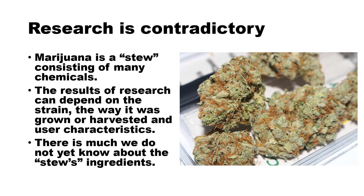The research on marijuana is contradictory, and that's not just because of the biases of researchers. One of the biggest problems is that marijuana is not a specific chemical — it is a stew consisting of many chemicals. Think about it: if you were served beef stew versus brussel sprouts vegetarian stew, the results would be different. The results of research can depend on the strain of marijuana, the way it was grown or harvested, and also user characteristics. There's much we do not yet know about all the stew's ingredients, and in fact the research comes in daily. At the very end of this presentation a new piece of research just found within the last week will be introduced.